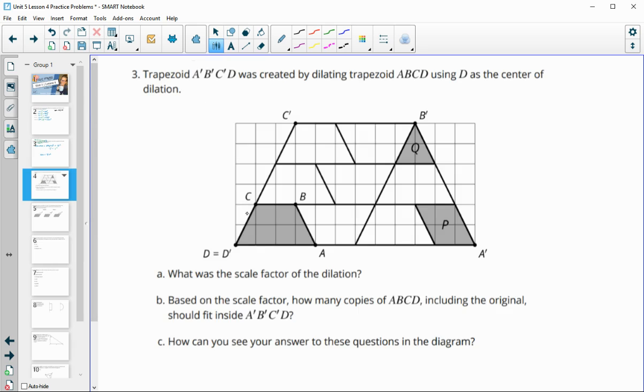Number three, trapezoid A prime, B prime, C prime, D prime. So this big trapezoid was created by dilating ABCD, this little one down here, using D as the center of dilation. What is the scale factor? And so we can see that we're going to this larger shape. Let me get this to be a little bit thicker.